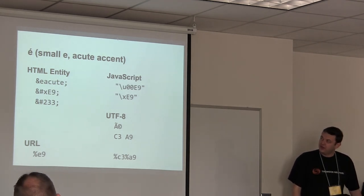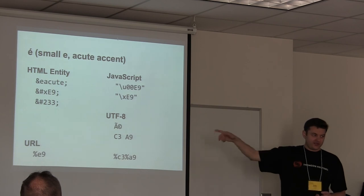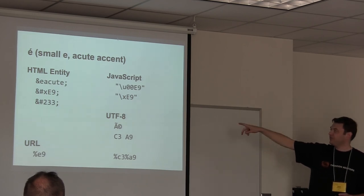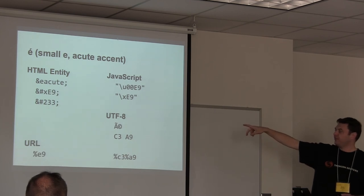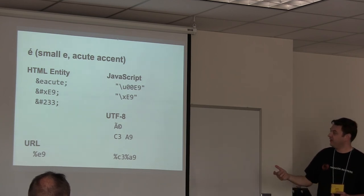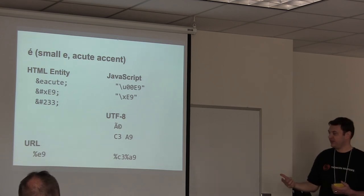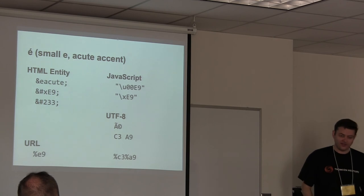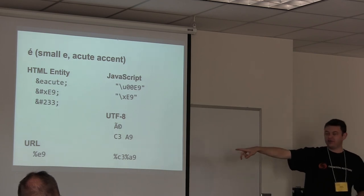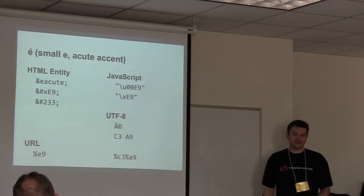For encoding the E-acute accent character, there are different formats: you can use an HTML entity by name like &eacute;, by hex value, or decimal value. In JavaScript you can use \u followed by the Unicode code point, or \x for characters at FF or below. The actual UTF-8 bytes for E-acute are C3 A9. In URLs, the percent-encoded form depends on whether the URL is UTF-8 encoded. The deprecated escape() function always dumped hex directly rather than using UTF-8, so avoid it.